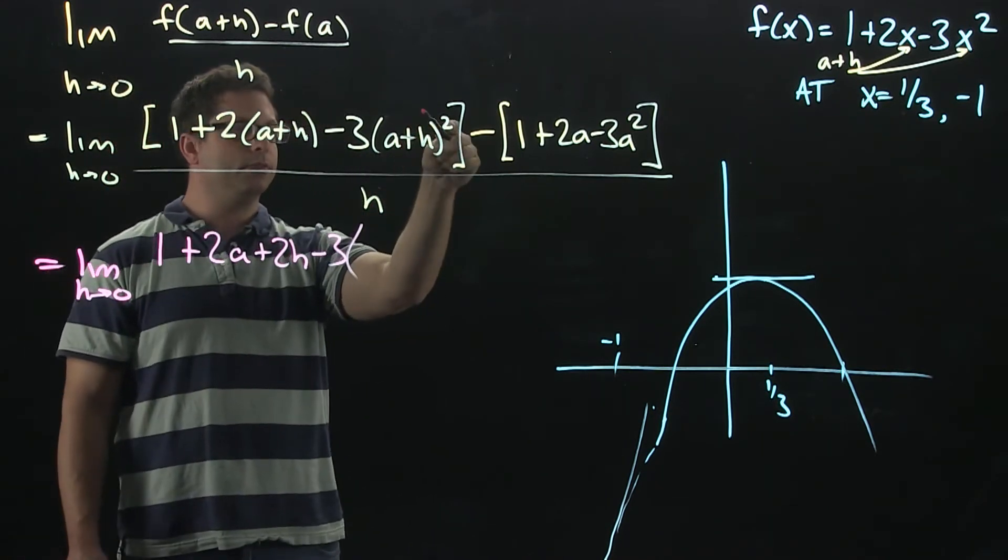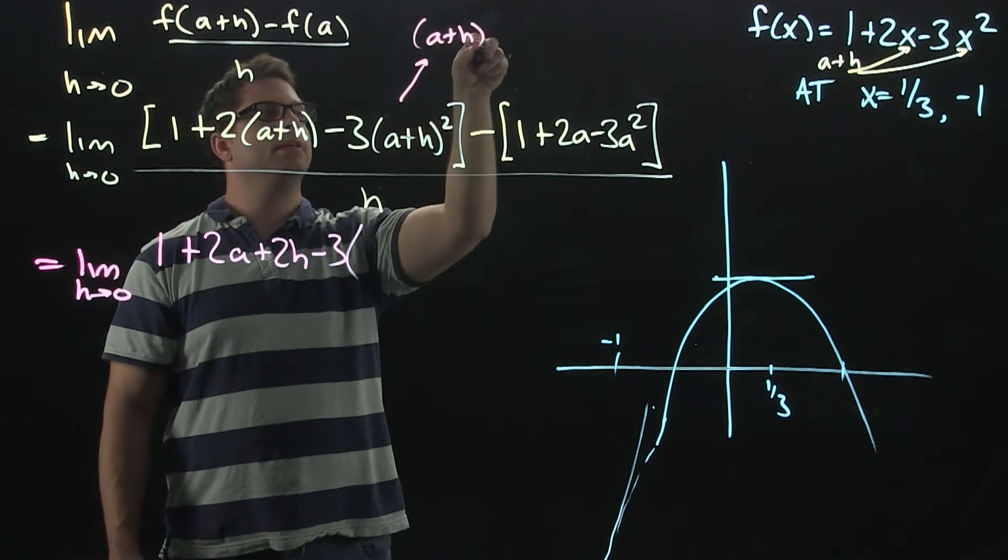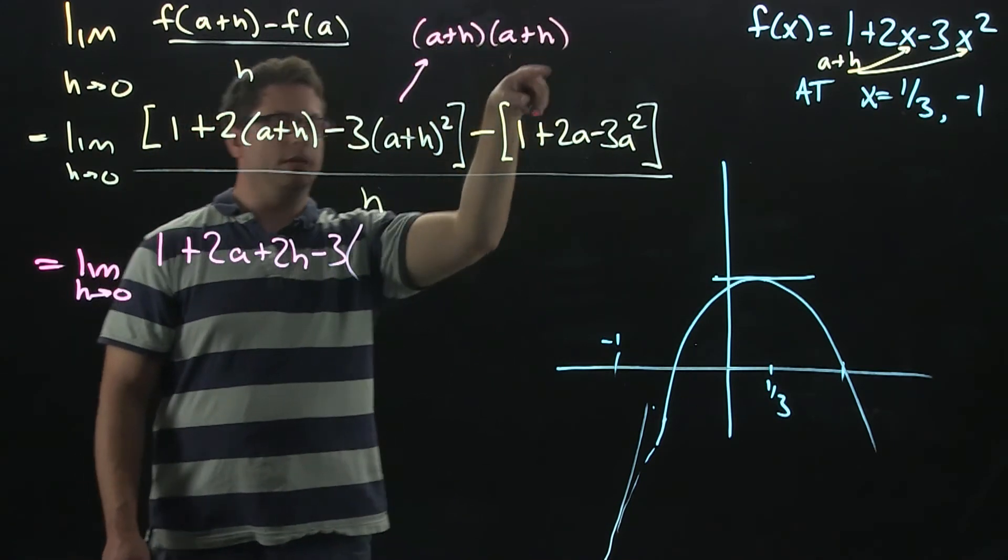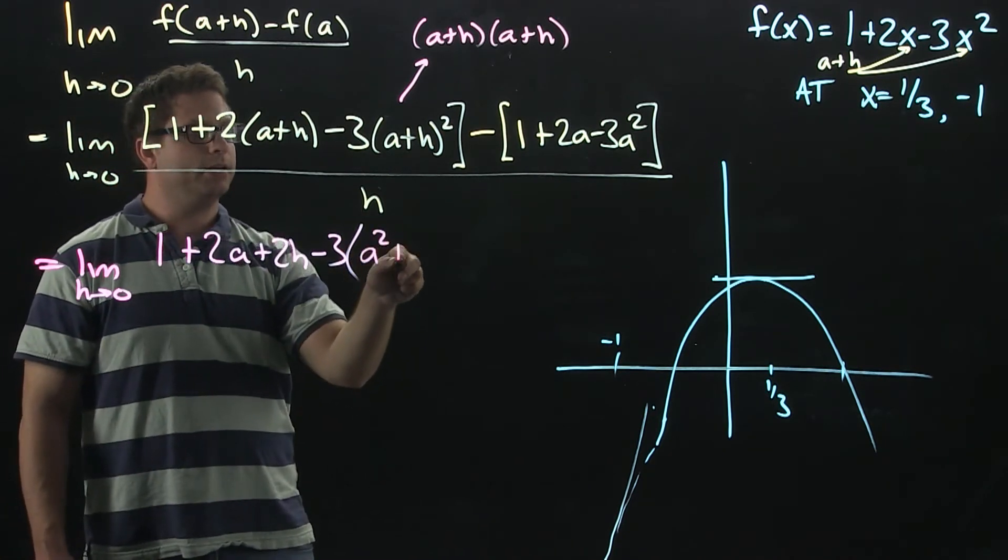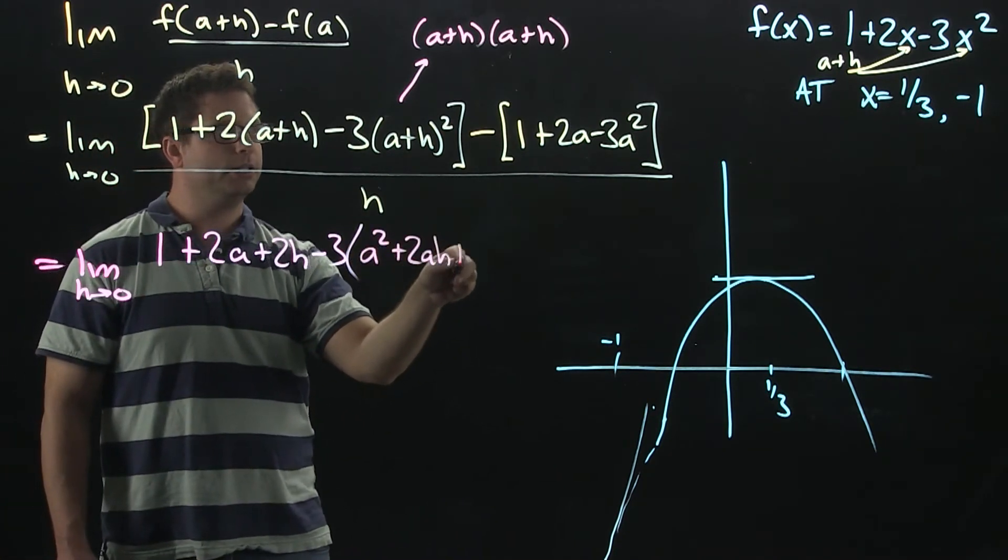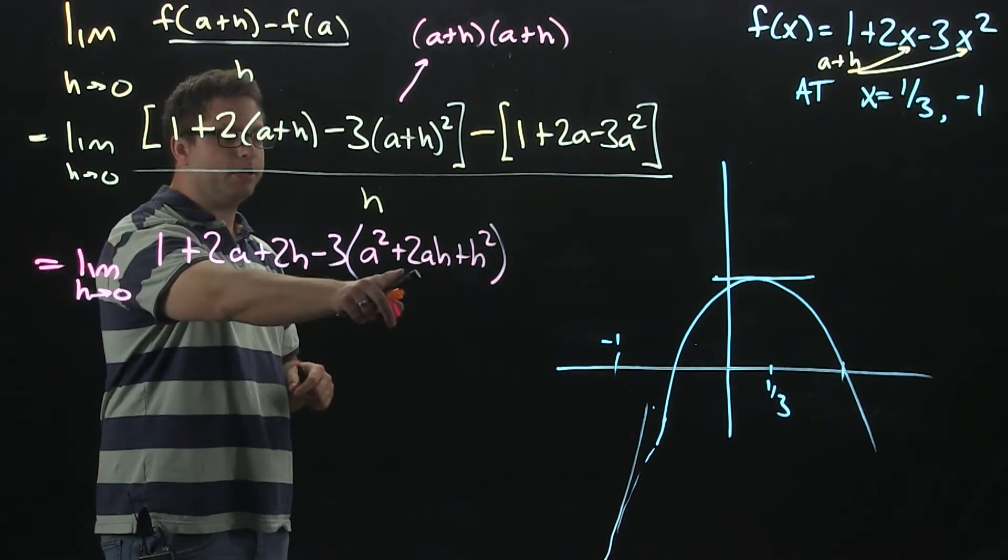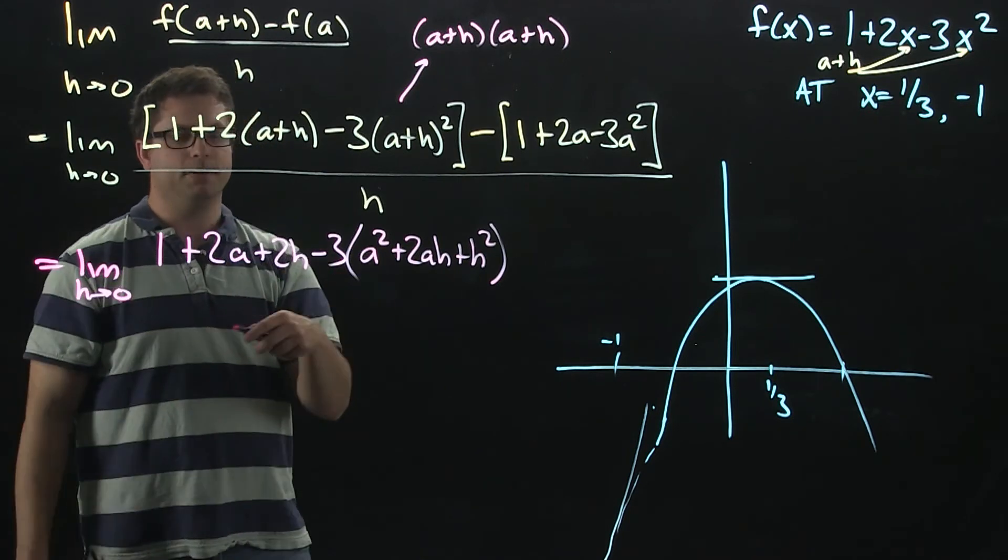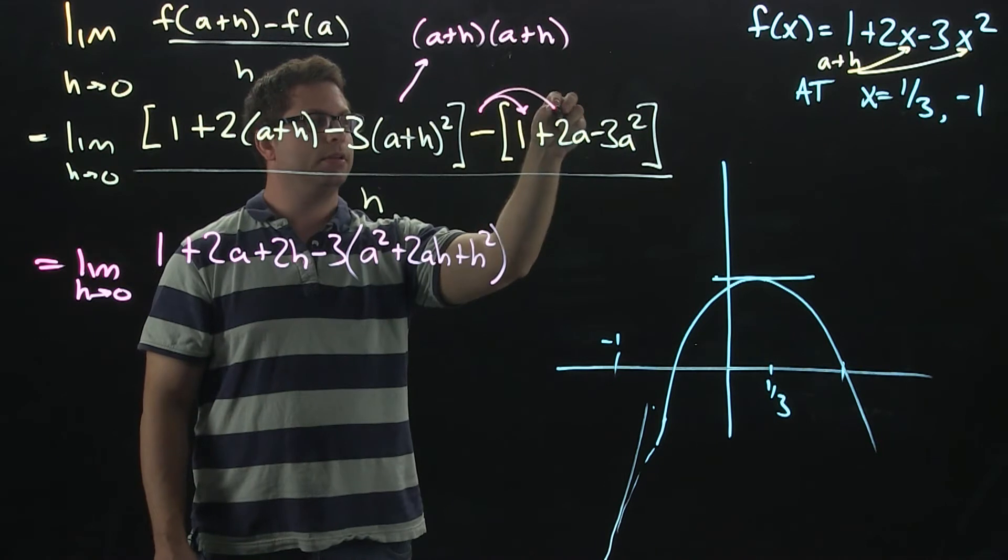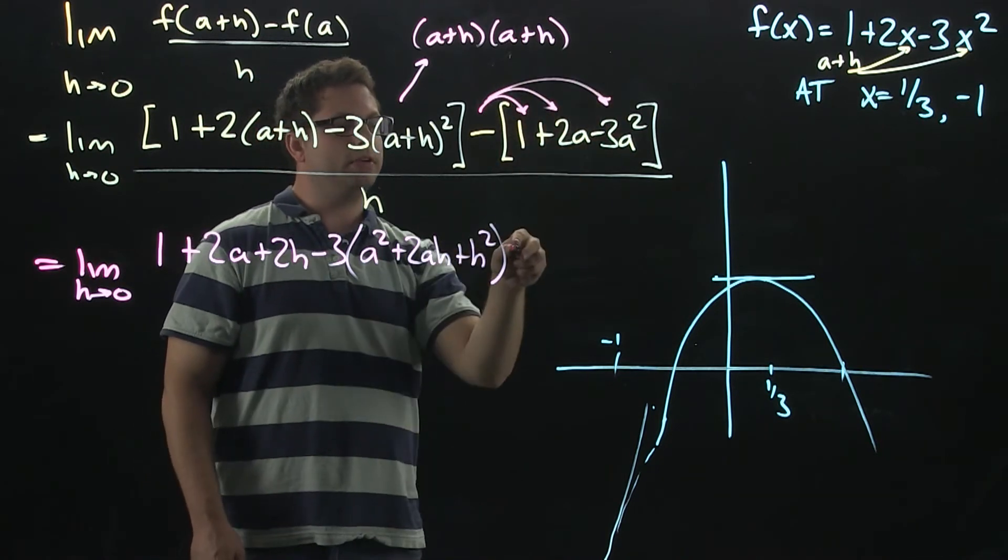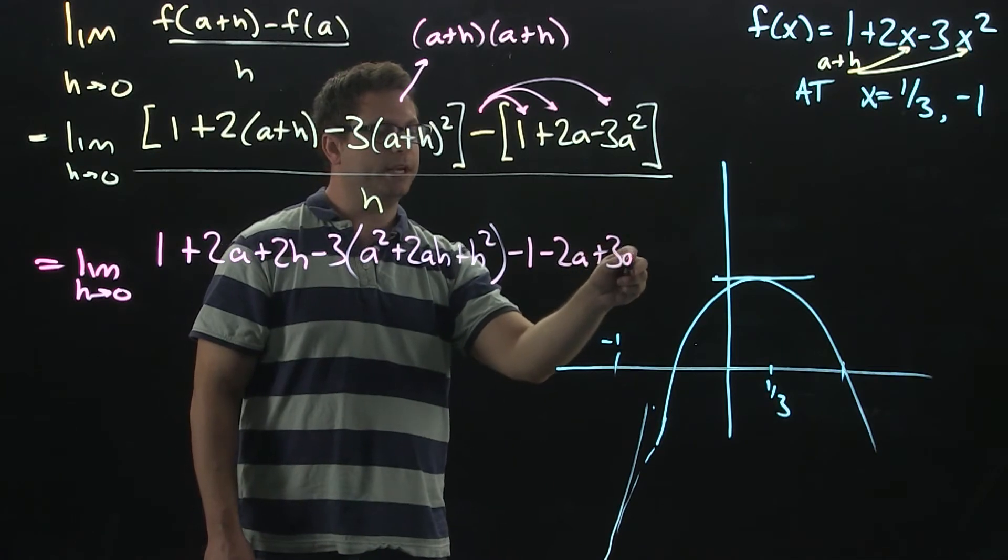And then I have to FOIL out the a plus h squared. Don't just distribute the 2. You do have to FOIL. What you can do is come up here, write that out, and then that's going to give me a squared 2ah plus h squared. Don't forget that there is a minus 3 in front of that that I will have to distribute out in a moment. Over here, I'll distribute this minus sign through.